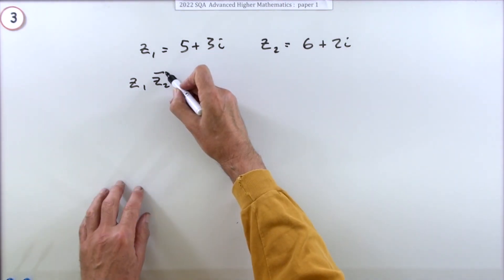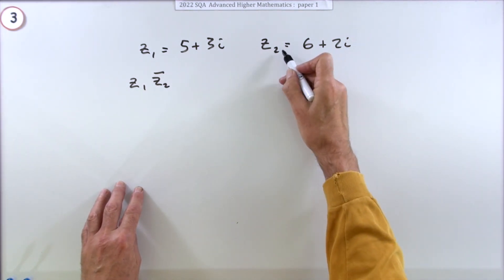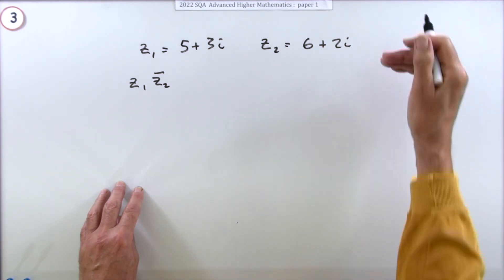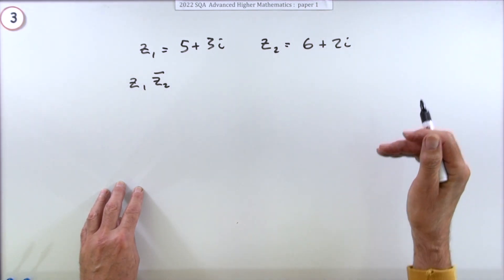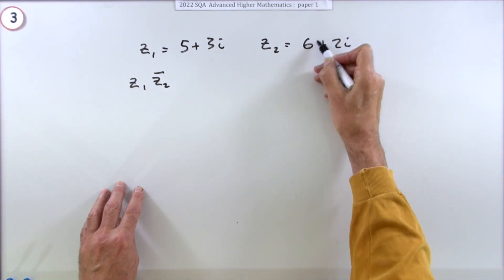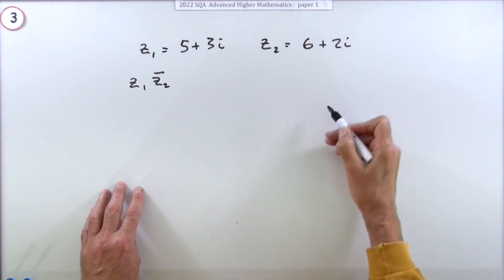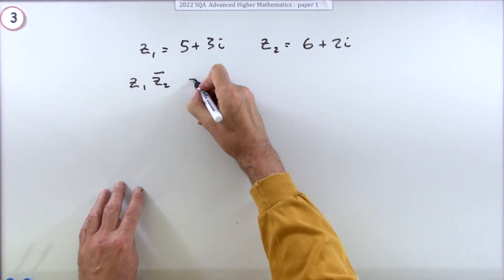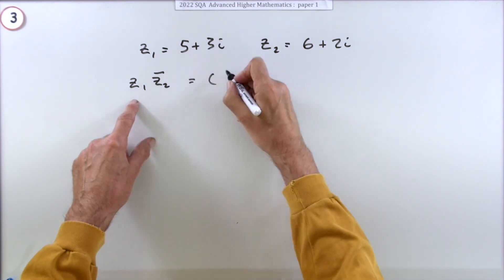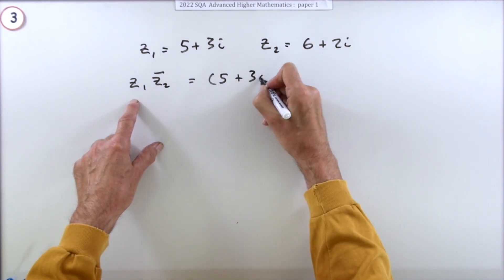Well, this little bar, that's the complex conjugate. That means it's the reflection of that complex number in the real axis in the argand diagram. What you're going to do is simply reverse the sign of the imaginary part. So this just means leave that first one alone, z1 was 5 plus 3i.